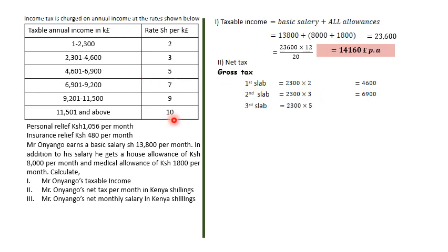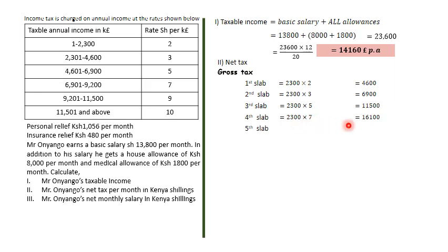Continuing the slab calculations: third slab — 2,300 × 5 = 11,500; fourth slab — 2,300 × 7 = 16,100; fifth slab — 2,300 × 9 = 20,700.